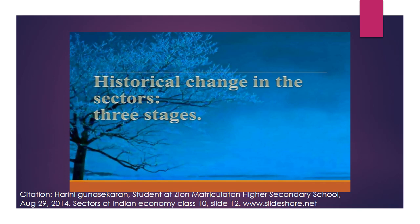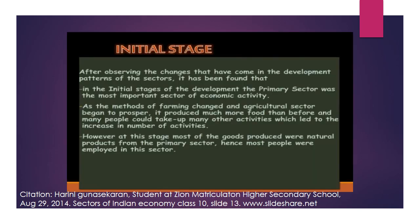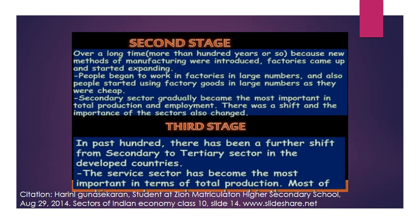Now we'll study the historical changes in the three stages. In the initial stage, whether a developing or developed country, all countries started from the agriculture sector only. Slowly over the years they moved from primary to secondary and then to the tertiary sector. In the initial stage it was only the primary sector; as they got more resources, they converted them into secondary manufacturing units.